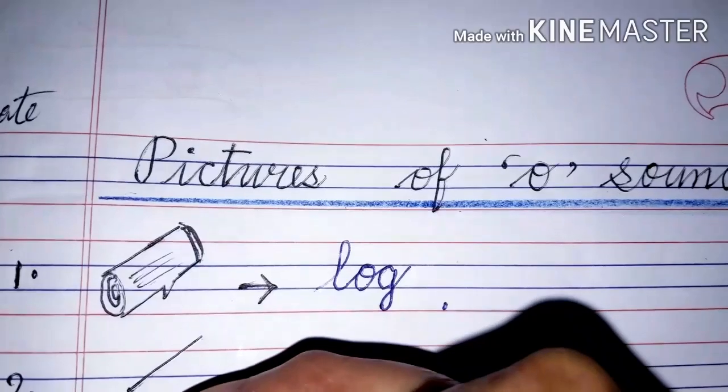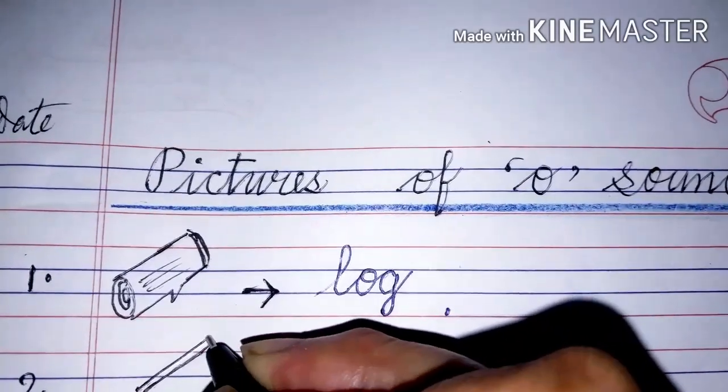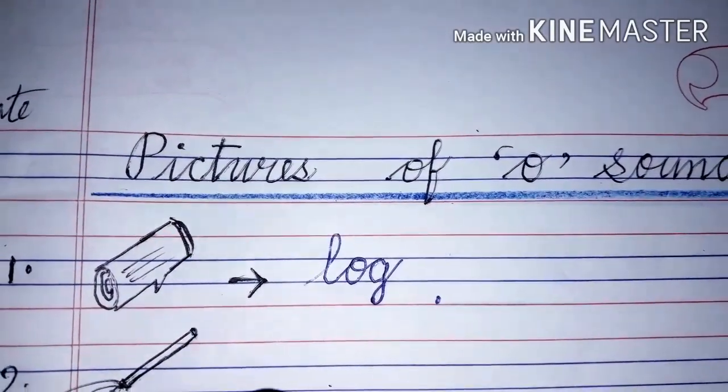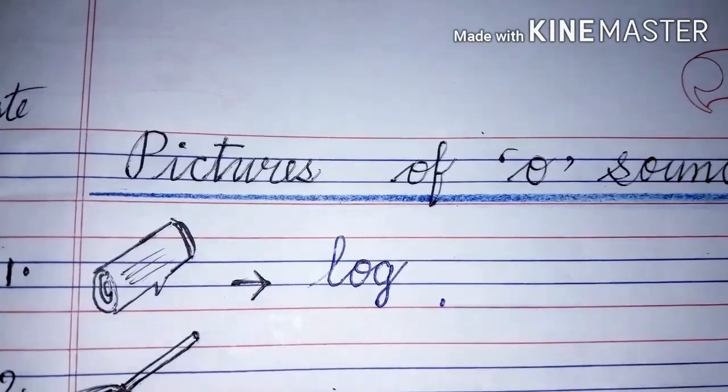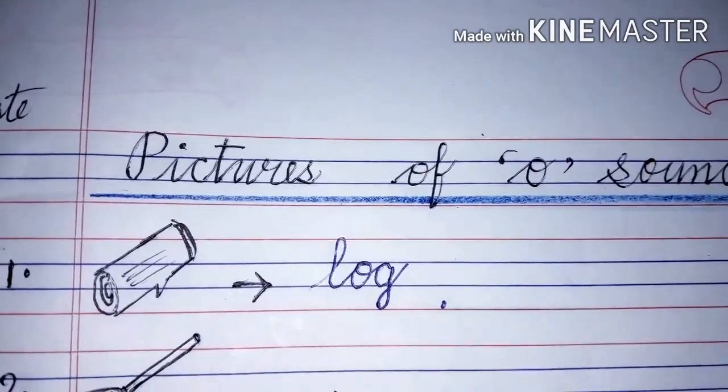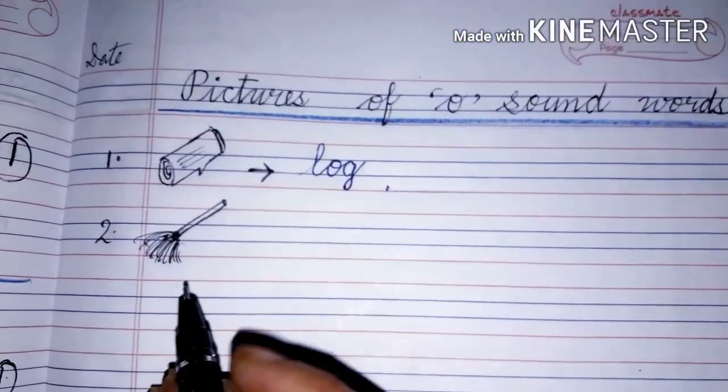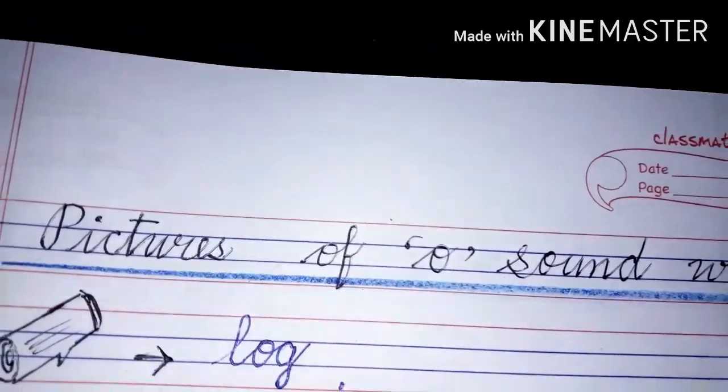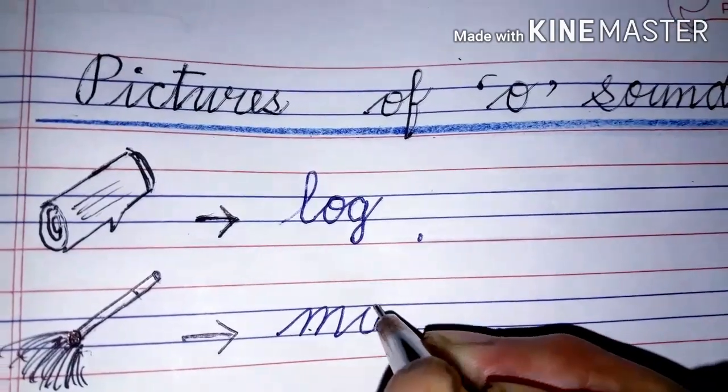Come to the second picture. Again, you have to draw a slanting line like this, one more slanting line parallelly, then you have to draw few lines roughly like this. Can you identify what is this? Yes, this is a mop. You will write here: M-O-P, mop.